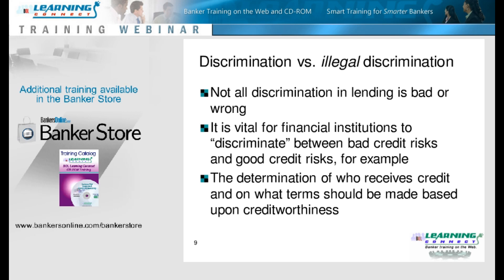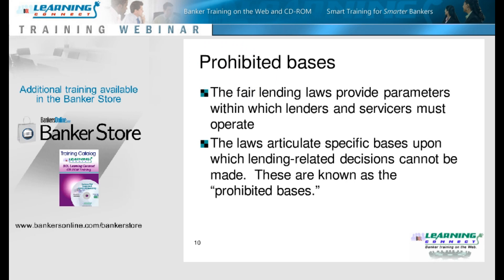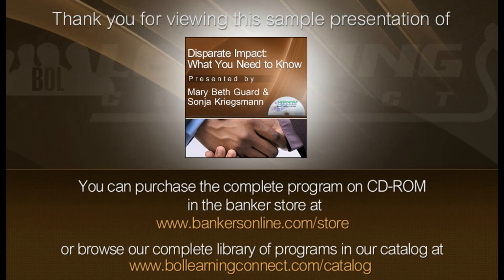Illegal discrimination is found when you deviate from focusing on creditworthiness and instead look at factors that should not be considered in credit decisions. The fair lending laws draw out the boundaries within which you must operate, setting the parameters so that you know which bases you cannot use for making your decision. Sam and Sonia and I were talking before the webinar began about this.